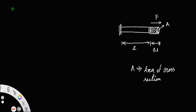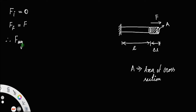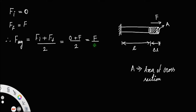The initial force acting on the rod is zero, since at time T equal to 0 there is no force acting on it. In order to make an extension of delta L, the final force acting on the rod is F. Therefore, the average force F_average equals the initial force plus the final force divided by 2, which gives 0 plus F divided by 2, equal to F by 2.